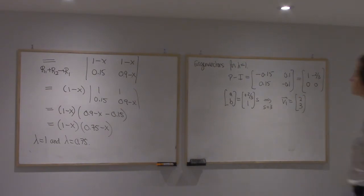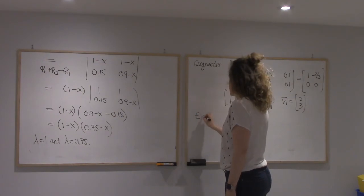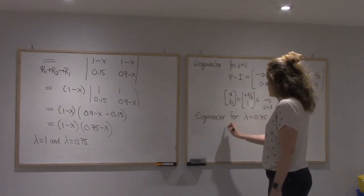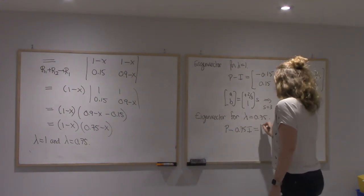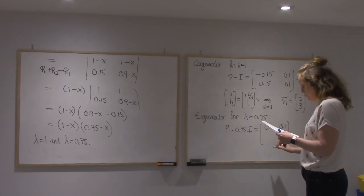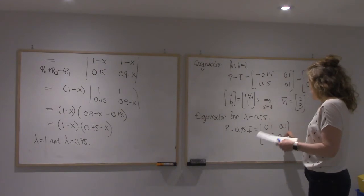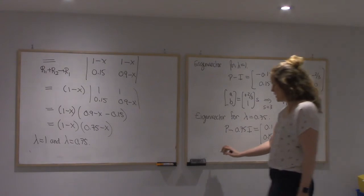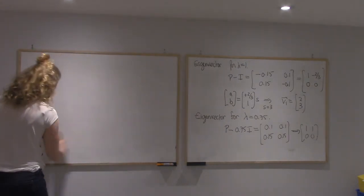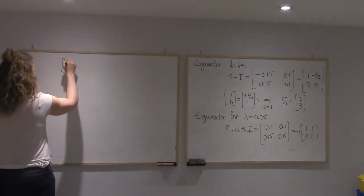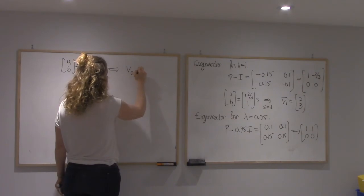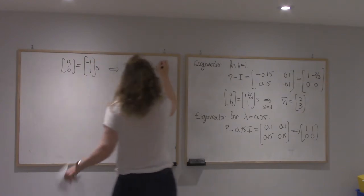All right, so I have my first eigenvector. My second eigenvector, I'll use lambda equals 0.75. So P minus 0.75I, that will be 0.1, 0.15, 0.1, 0.15. That reduces to 1, 1. And so I'm going to take A, B equals 1, minus 1. So my second vector will be 1, minus 1.